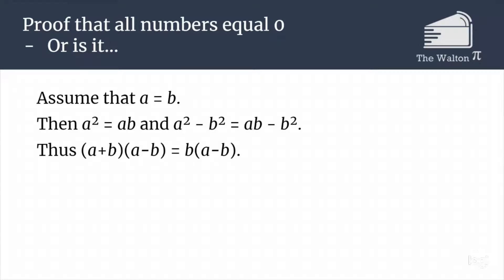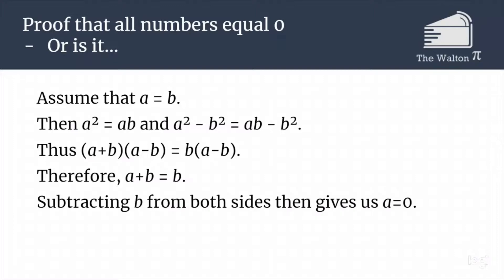We have an a minus b on both sides, so we can cancel that out. So we have a plus b is equal to b. Well, we can then subtract b from both sides, so that means that we are going to get a equals zero.